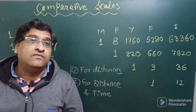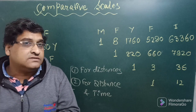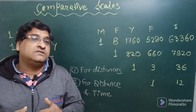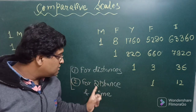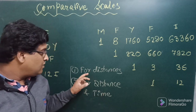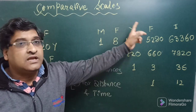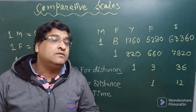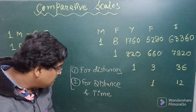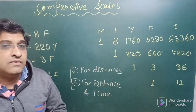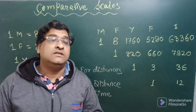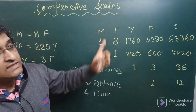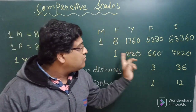So what is a comparative scale? As the name implies, it is used for comparison of different types of units — such as yards, furlongs, or miles in the English system. Two types of comparative scales are shown here: one for converting English distances into metric units like meters, decimeters, or decameters, and another for comparing distances with time, generally termed time scales.